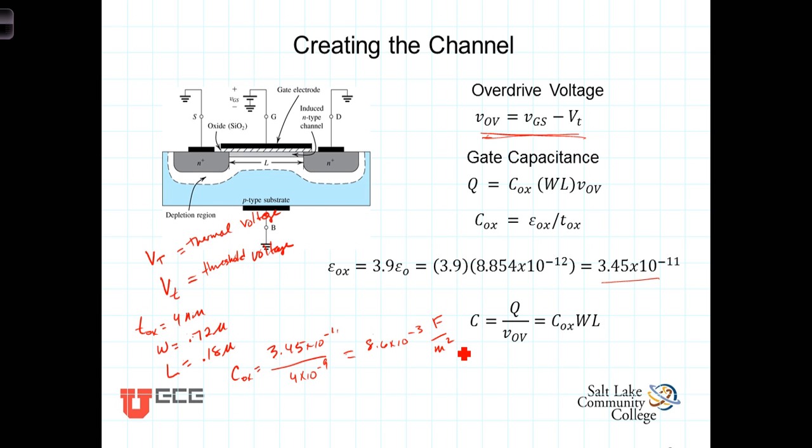Now meters are awfully big units to be calculated at this kind of scale, but nonetheless, we can go ahead and use those and then calculate the actual capacitance is equal to COX, which we just calculated to be 8.6 times 10 to the minus 3rd, times the width, which is 0.72 times 10 to the minus 6th, times the length, which is 0.18 times 10 to the minus 6th.